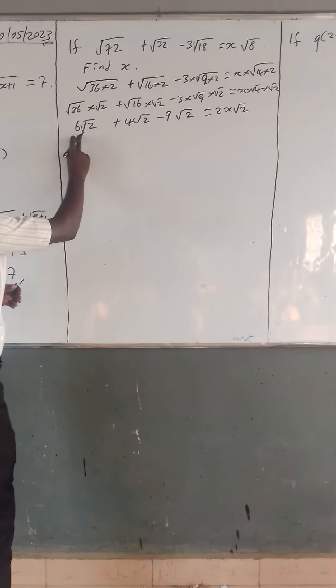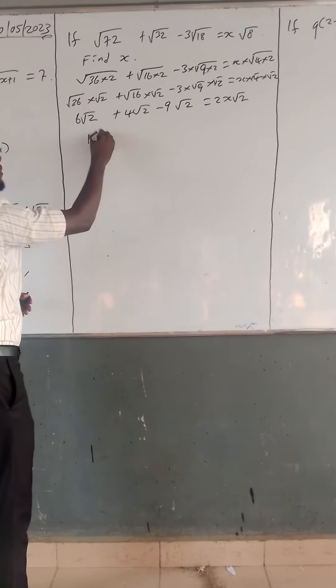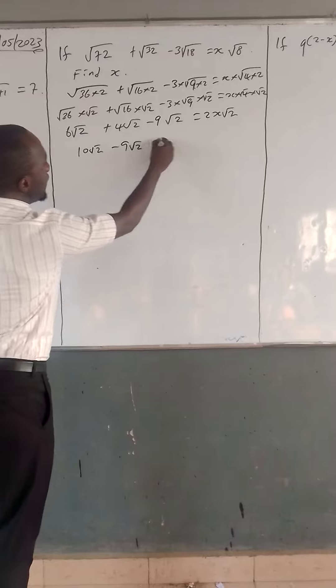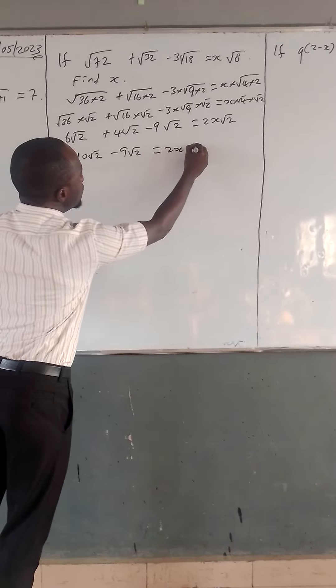Now we are left with 6 root 2 plus 4 root 2, which is 10 root 2, minus 9 root 2, and that equals 2x square root of 2.